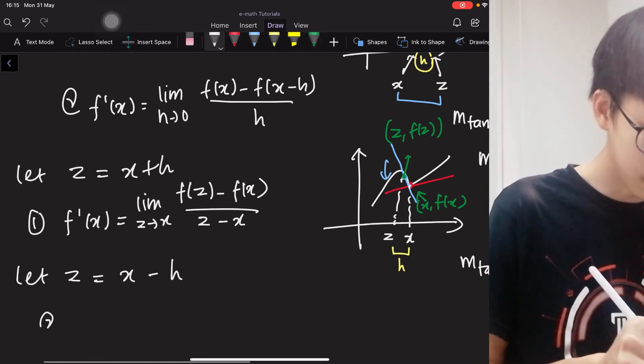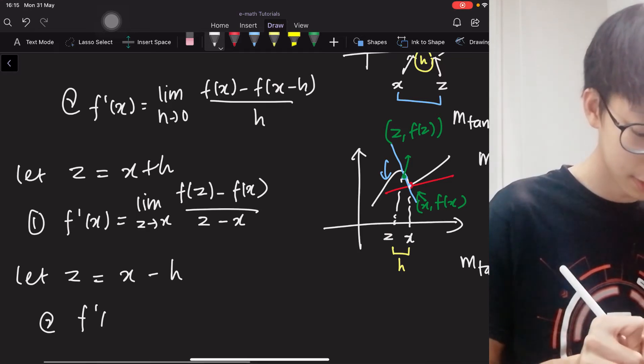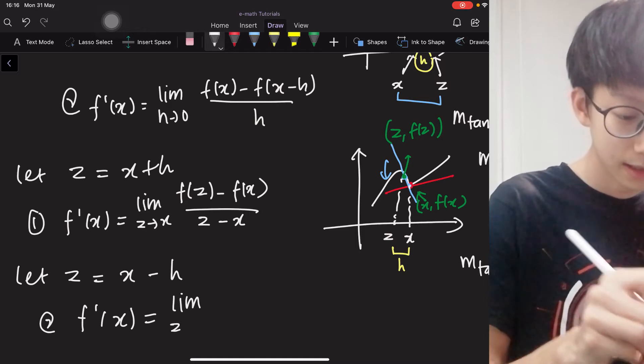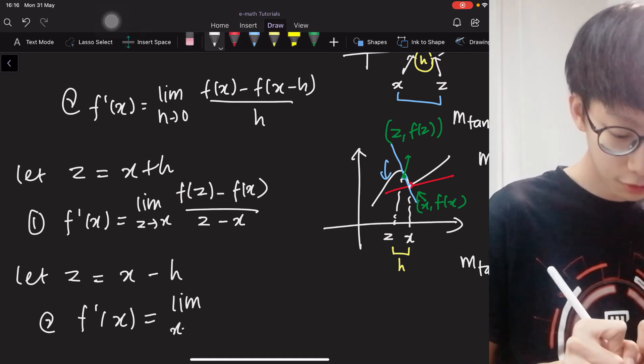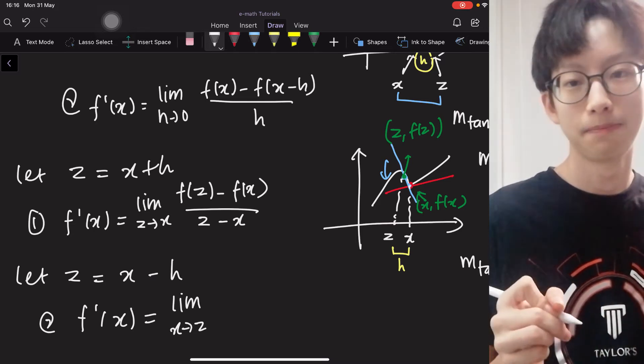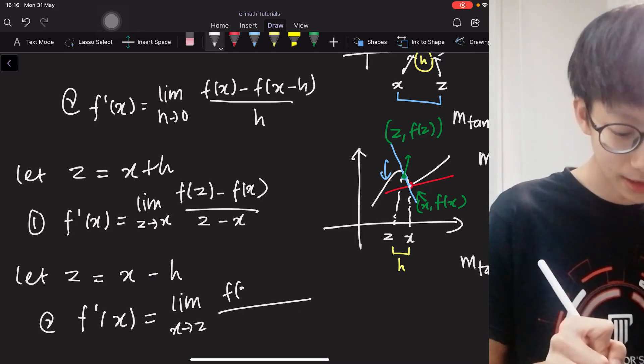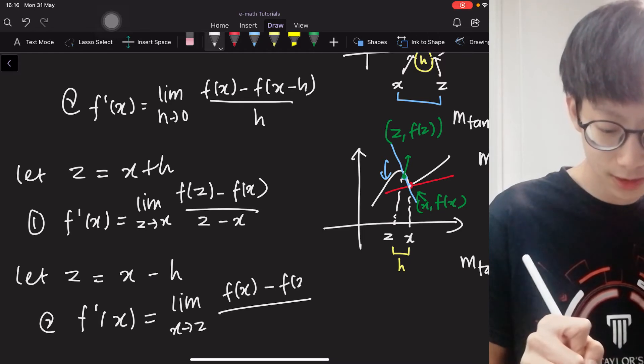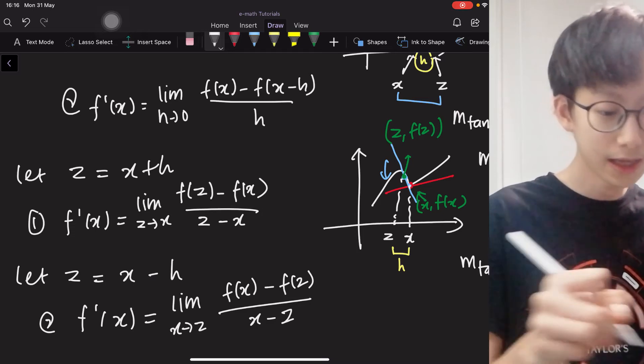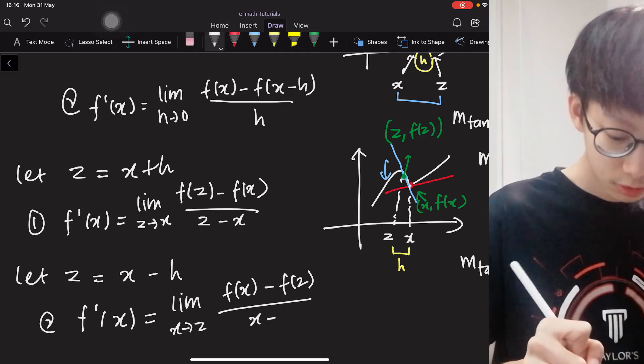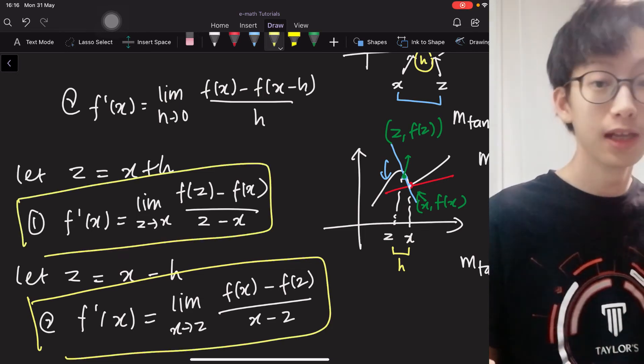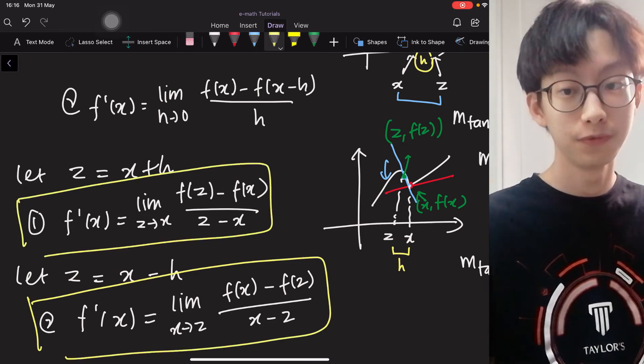So if we replace our x minus h with z, the second formula will now become f'(x) equals to the limit as x approaches z. Actually, that actually means the same thing. And this time it is f(x) minus f(z) over x minus z.